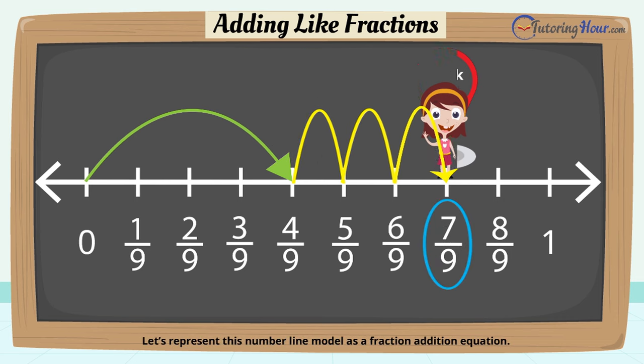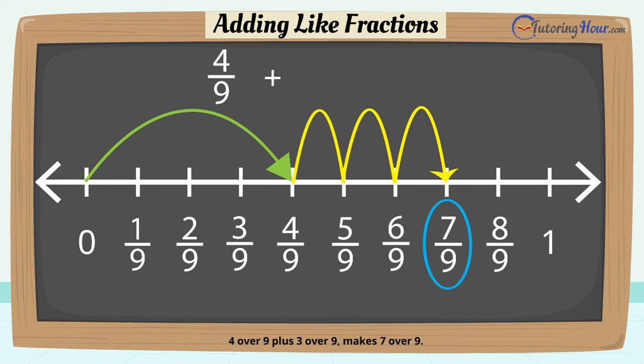Let's represent this number line model as a fraction addition equation. Four over nine plus three over nine makes seven over nine. Hooray, we have solved one more. Great going.